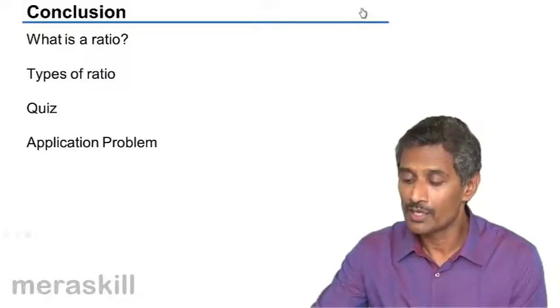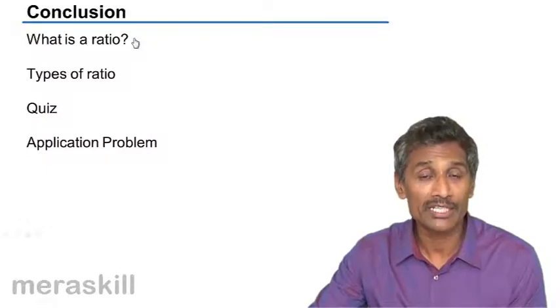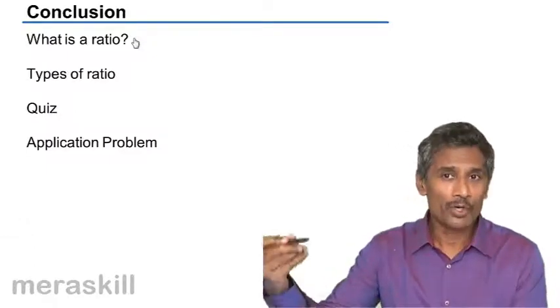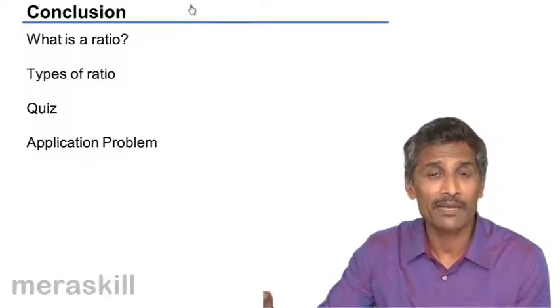So ultimately we need to have a conclusion. We covered what is a ratio - a ratio is of course a simple concept of comparison by division. We did all the various types of ratios.